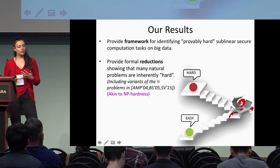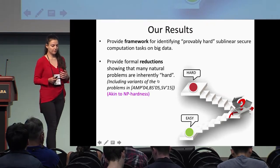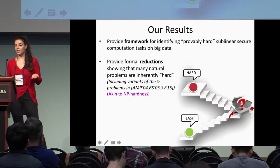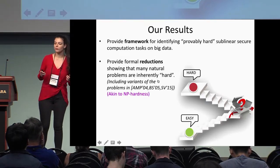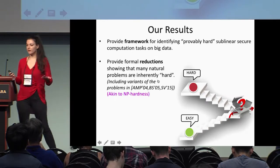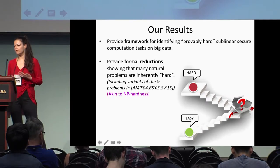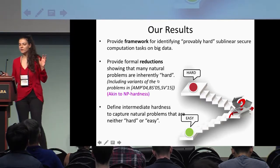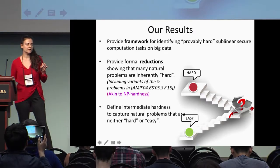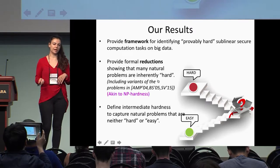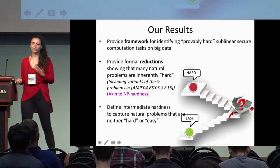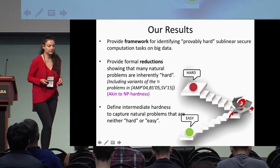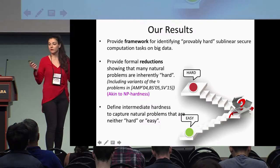Once we have such a framework, we can provide formal reductions showing if problems are actually hard — like NP-completeness, where we can show that some variants of protocols are easy and some are hard. Moreover, we're going to provide some intermediate hardness, capturing protocols that are neither easy nor hard. It's like how factoring is conjectured to not be NP-hard, but we believe it's hard.